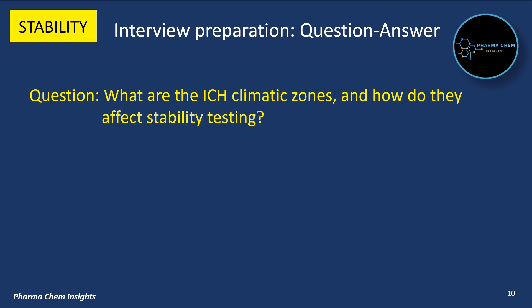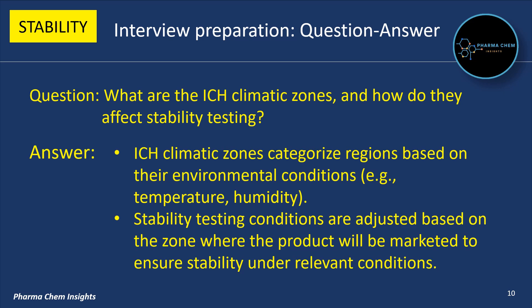Next question: What are the ICH climatic zones and how do they affect stability testing? ICH climatic zones categorize regions based on their environmental conditions, such as temperature and humidity. Stability testing conditions are adjusted based on the zone where the product will be marketed to ensure stability under relevant conditions.